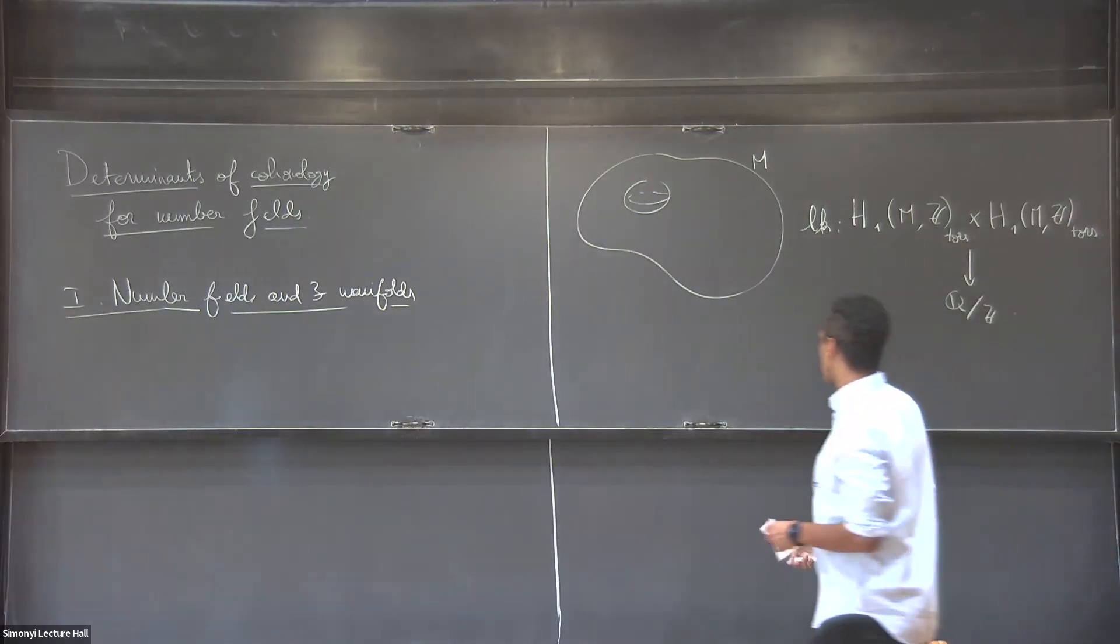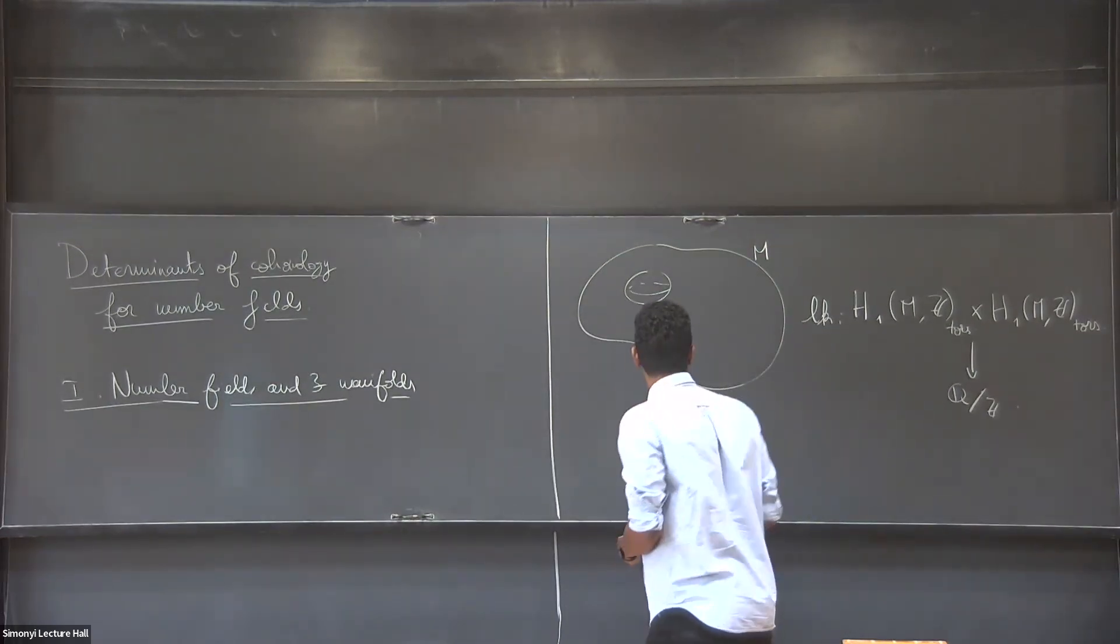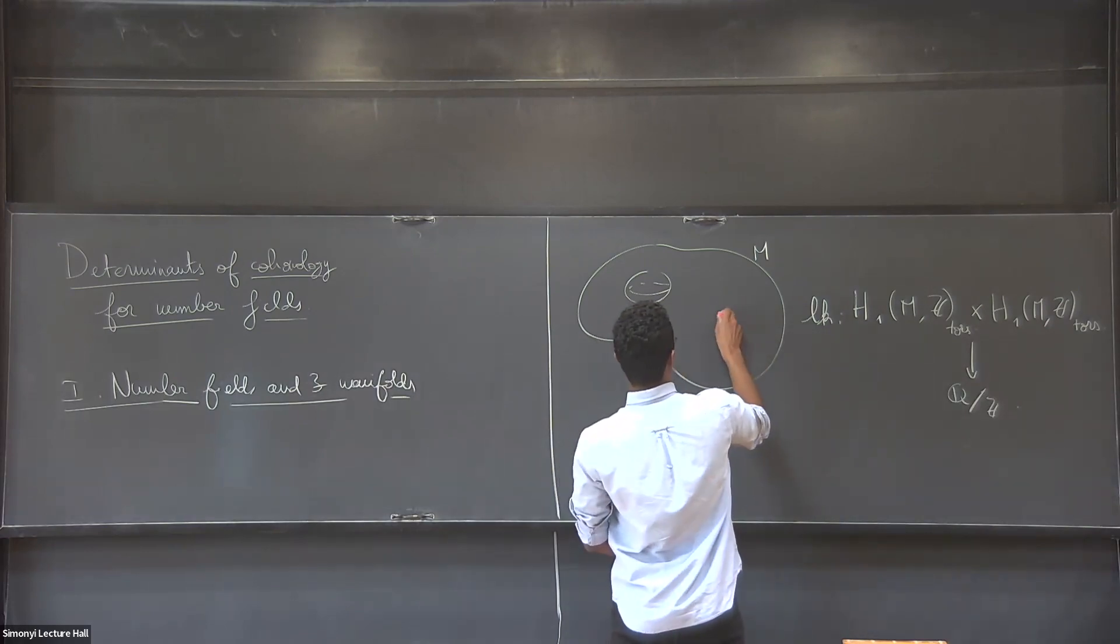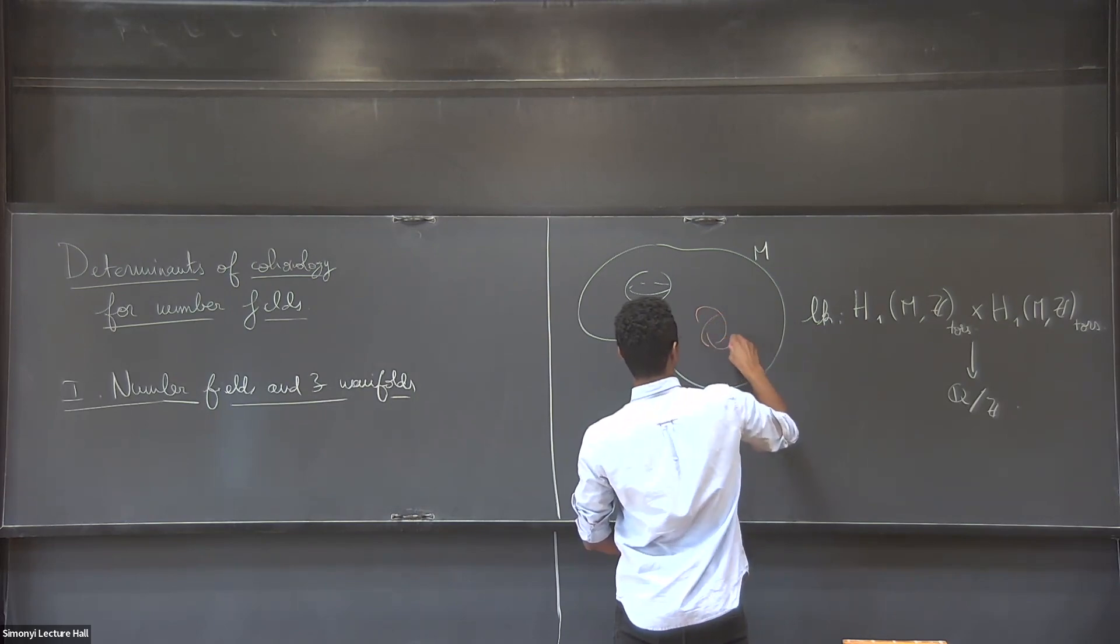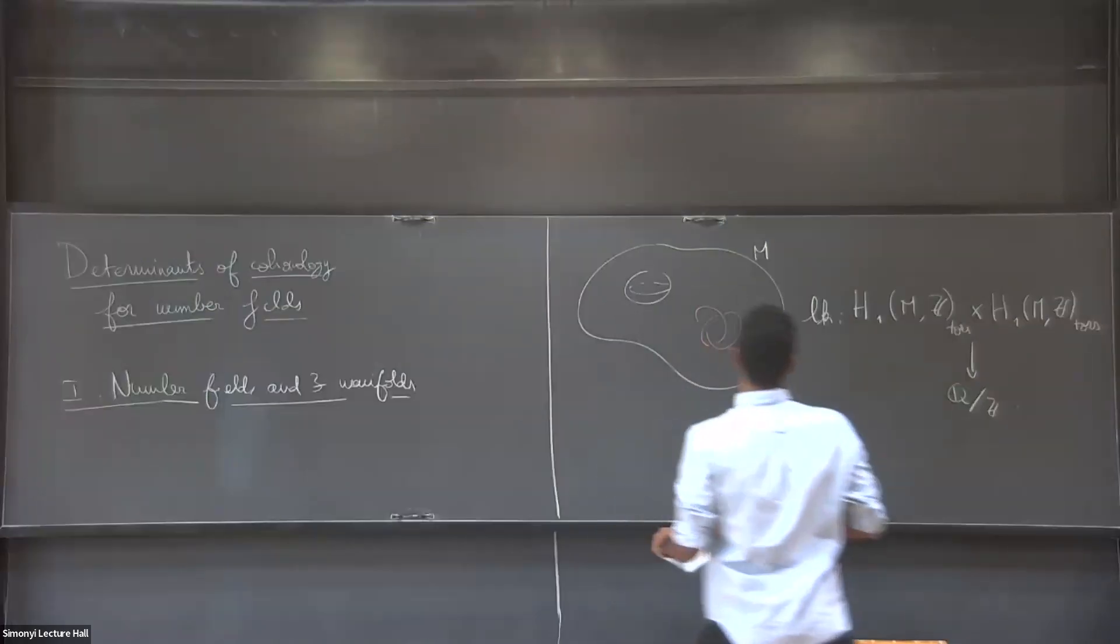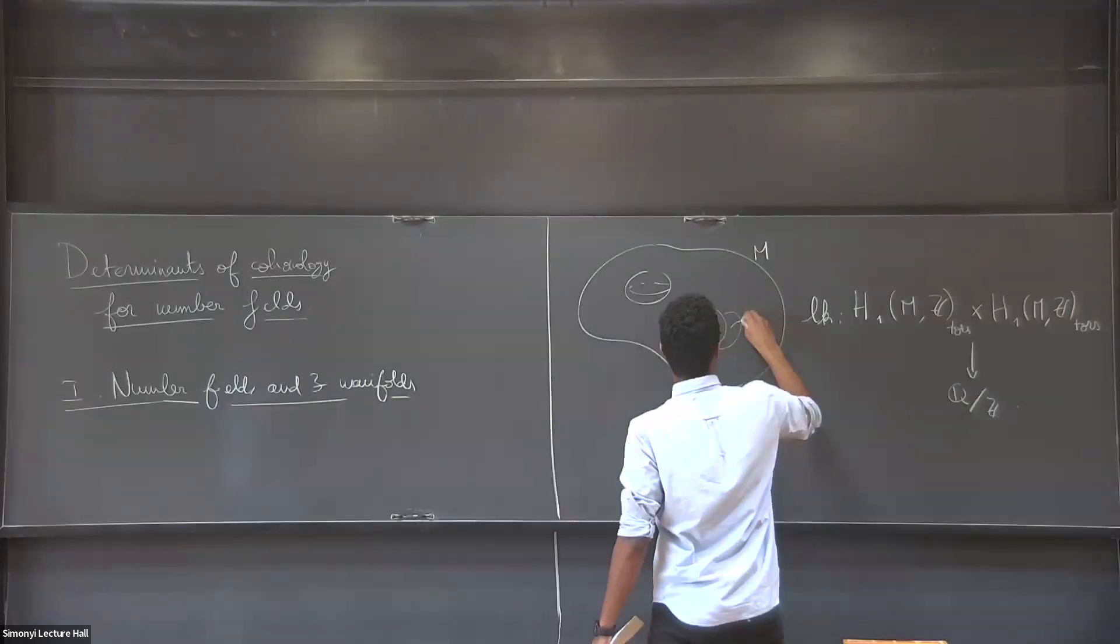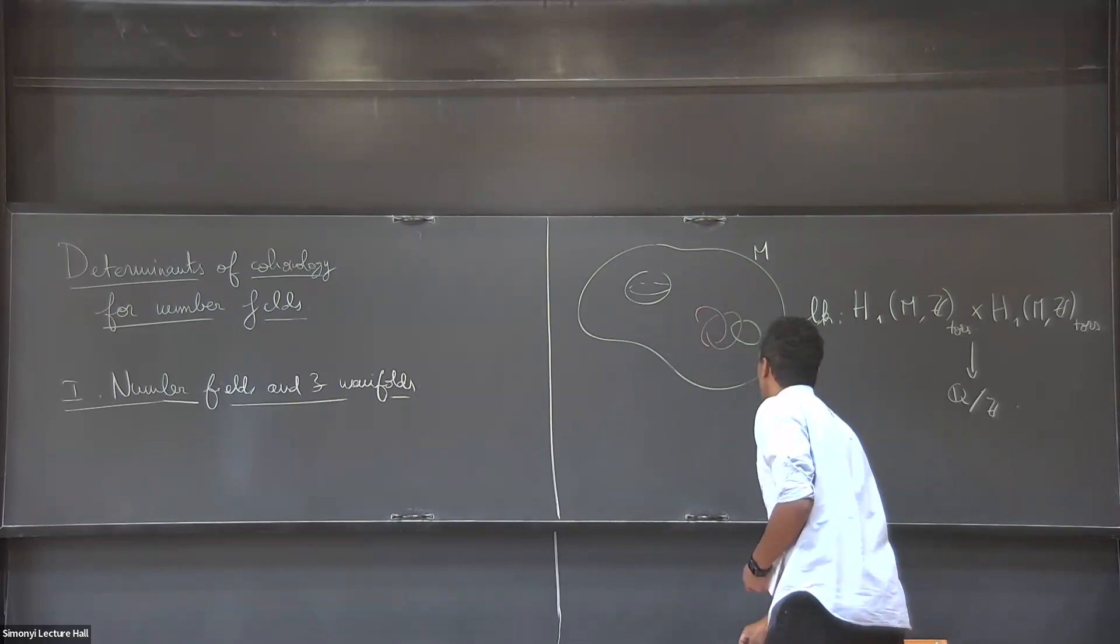So if you take a linking pairing of A and B, you want to have some notion of the number of times one circle loops around another. So I'm just going to draw a few circles. I'll start with a trefoil. Try to draw it correctly. That looks okay. And then maybe you have another circle lying in the manifold. So I'm going to call the red one A and the second one B.